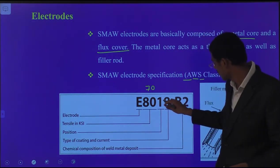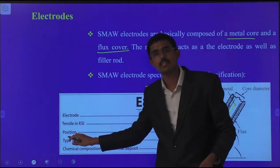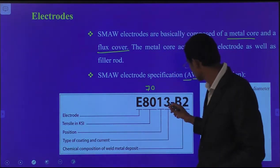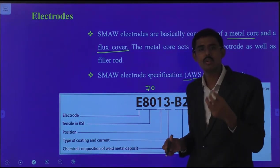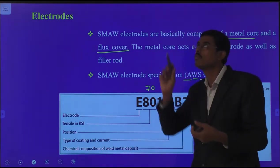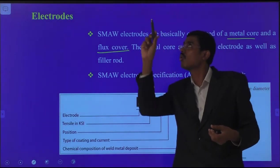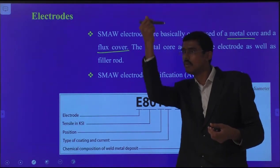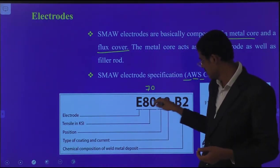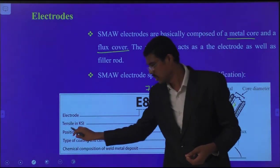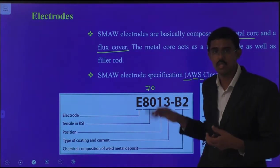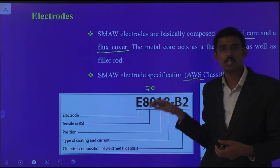By the AWS system they define it like this: 'E' belongs to electrode. The next two digits '80' belong to tensile strength measured in ksi. The digit '1' belongs to the welding positions — this electrode having good solubility and withstanding property means it can go to overhead positions without the melt falling down. So '1' in E8013 determines all positions. The '3' belongs to type of coating available.